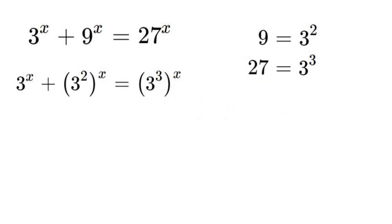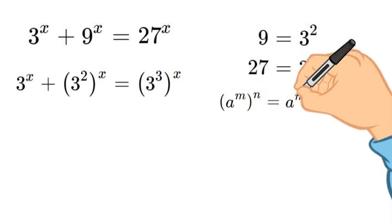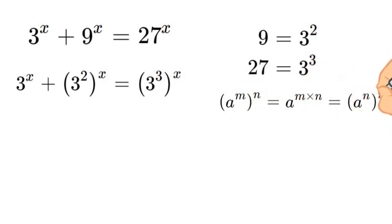Now we know that we are going to use an exponent property to rewrite this. If we have a to the power m to n, it's equal to a to the power of m times n. You can also say that it equals a to the power of n times m.